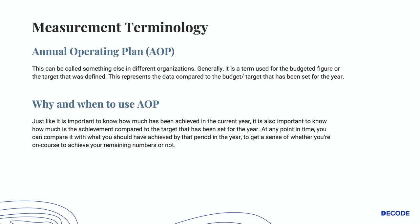The third term is AOP, or Annual Operating Plan. This can be called something else in different organizations. Generally, it is a term used for the budgeted figure or the target that was defined. This represents data compared to the budget or target that has been set for the year. Just like it is important to know how much was achieved in the current year, it is also important to know how much the achievement is compared to the target. At any point in time, you can compare it with what you should have achieved by that period to get a sense of whether you're on course to achieve your remaining numbers.